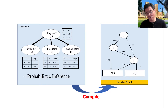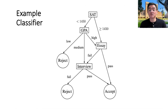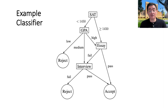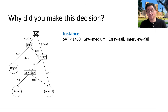Let me motivate these two questions further using a classifier for admission into a program based on four features: SAT score, GPA, and the quality of the essay and the interview. Suppose we have an applicant who got a certain SAT score, their GPA is medium, and both their essay and interview failed. So the decision is rejected.